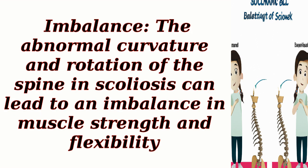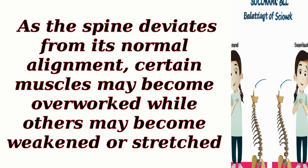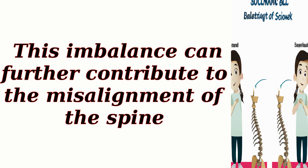Imbalance: the abnormal curvature and rotation of the spine in scoliosis can lead to an imbalance in muscle strength and flexibility. As the spine deviates from its normal alignment, certain muscles may become overworked while others may become weakened or stretched. This imbalance can further contribute to the misalignment of the spine.